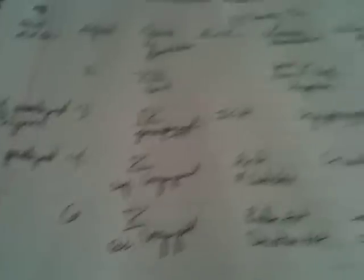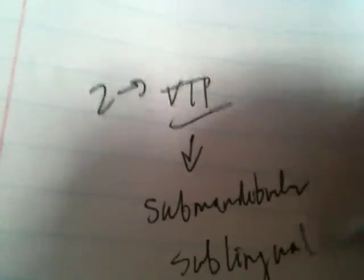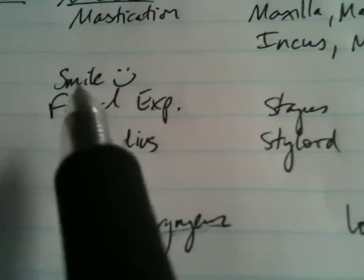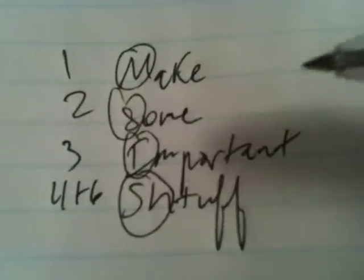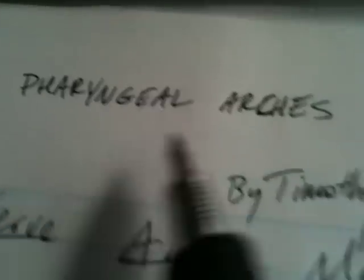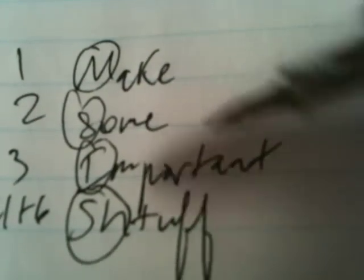One more thing: the facial nerve — what else does it innervate? It innervates the submandibular and sublingual glands. Both of these begin with S. And we know so does smiles, stapedius, stapes, and styloid. So all you need to remember is that these pharyngeal arches make some important stuff.